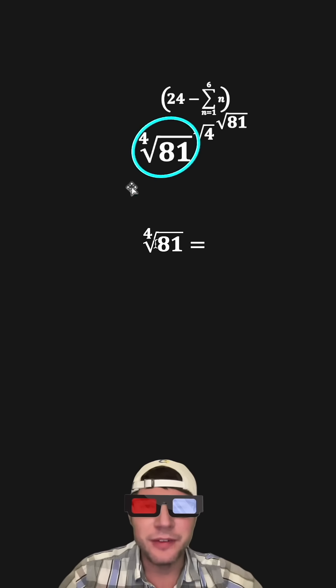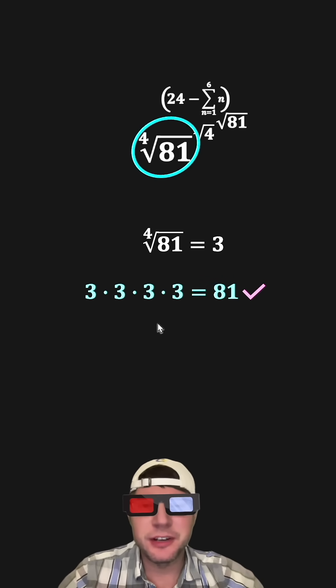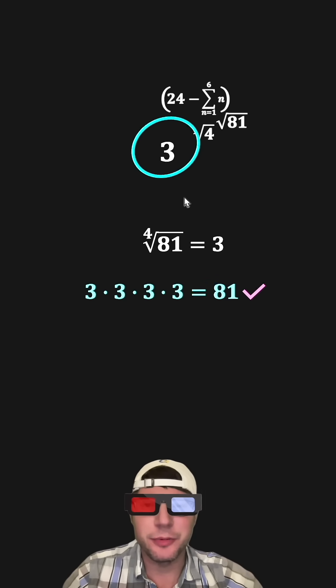Now we get to do the 4th root of 81. This ends up being 3, because 3 times 3 times 3 times 3 is equal to 81. So the 4th root of 81 is going to change into 3.